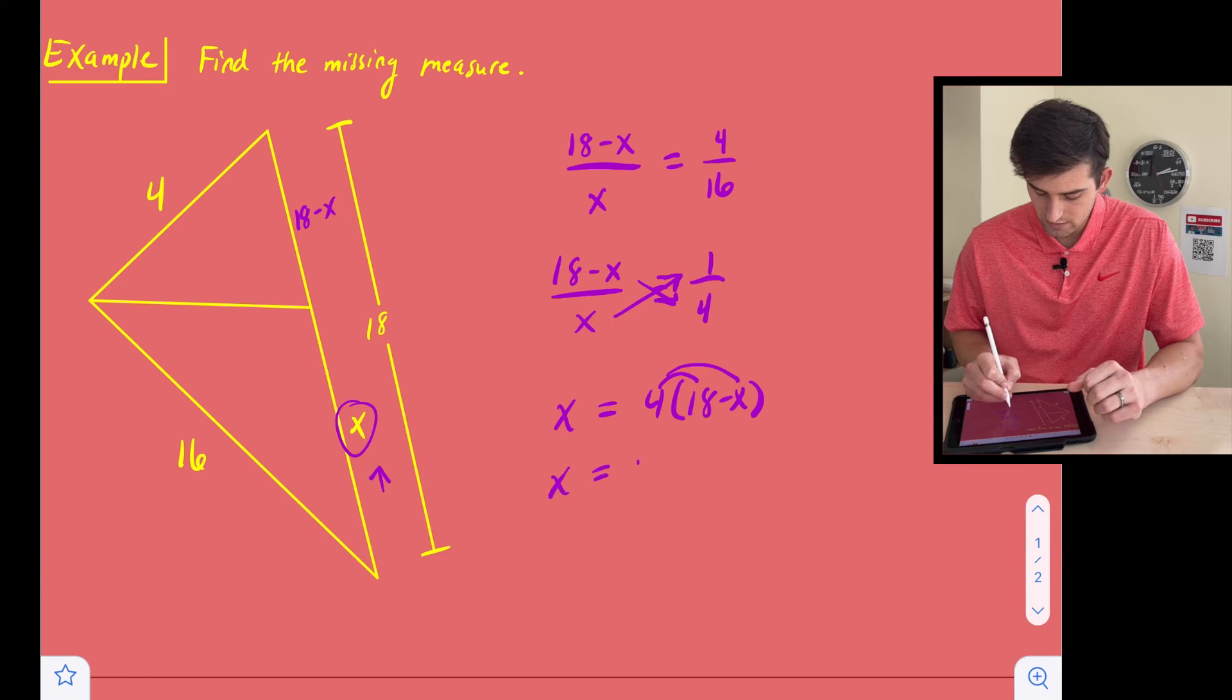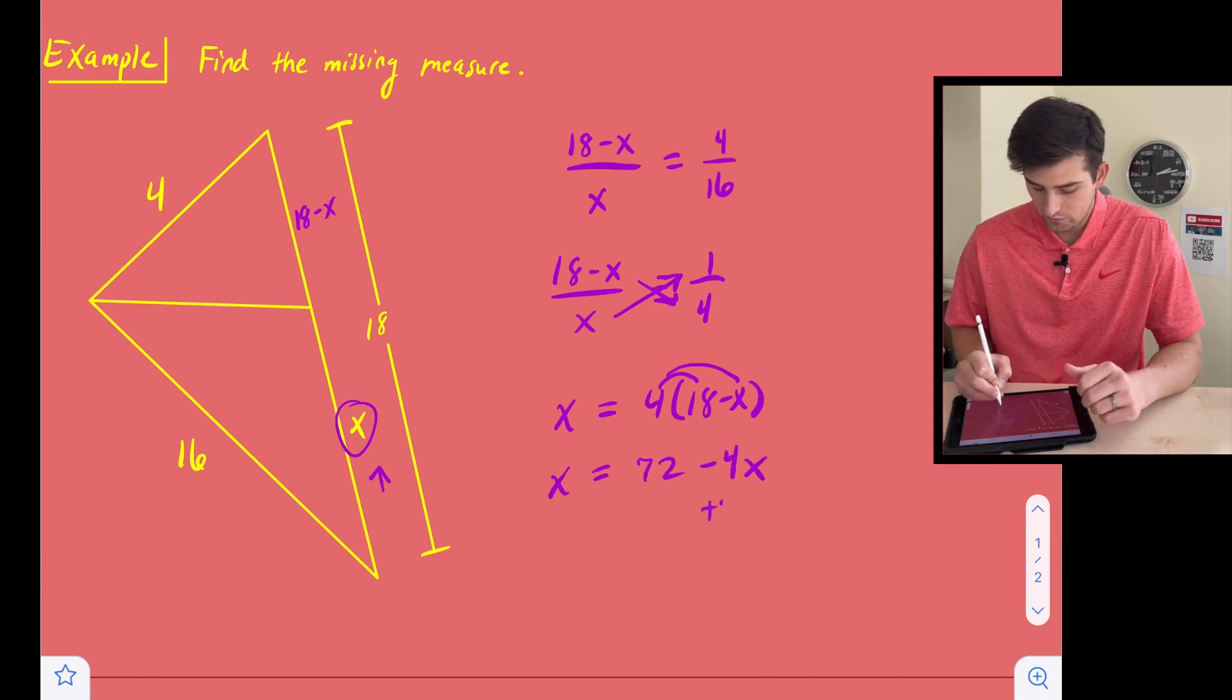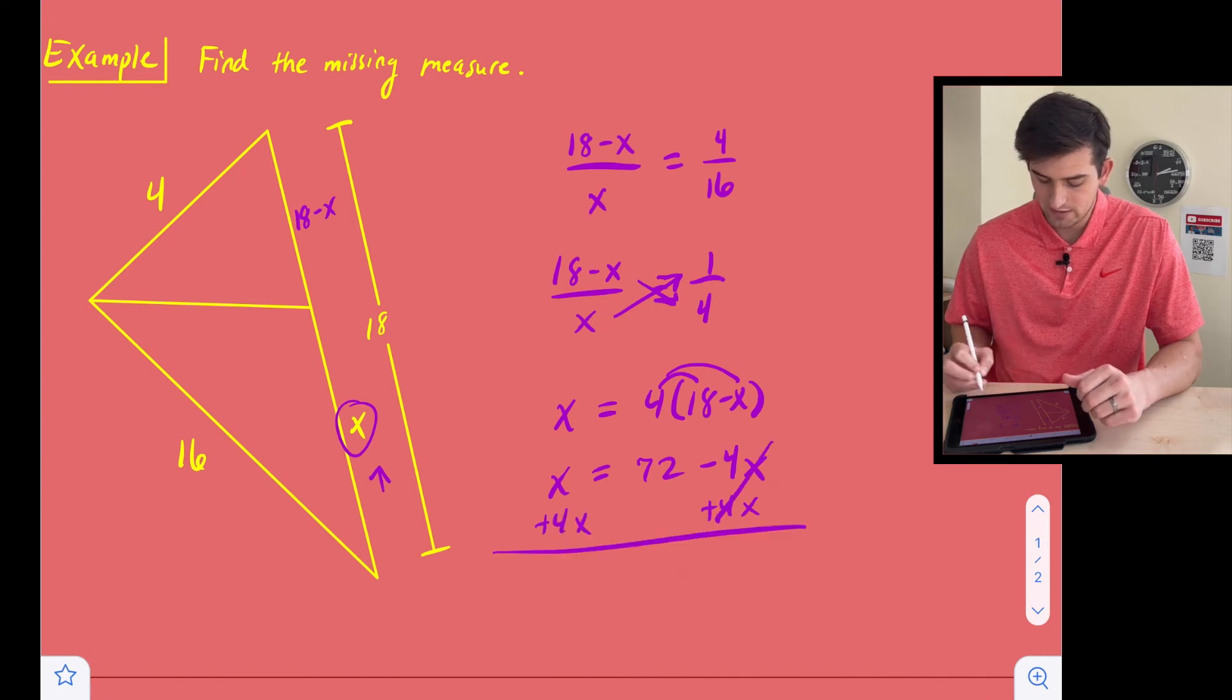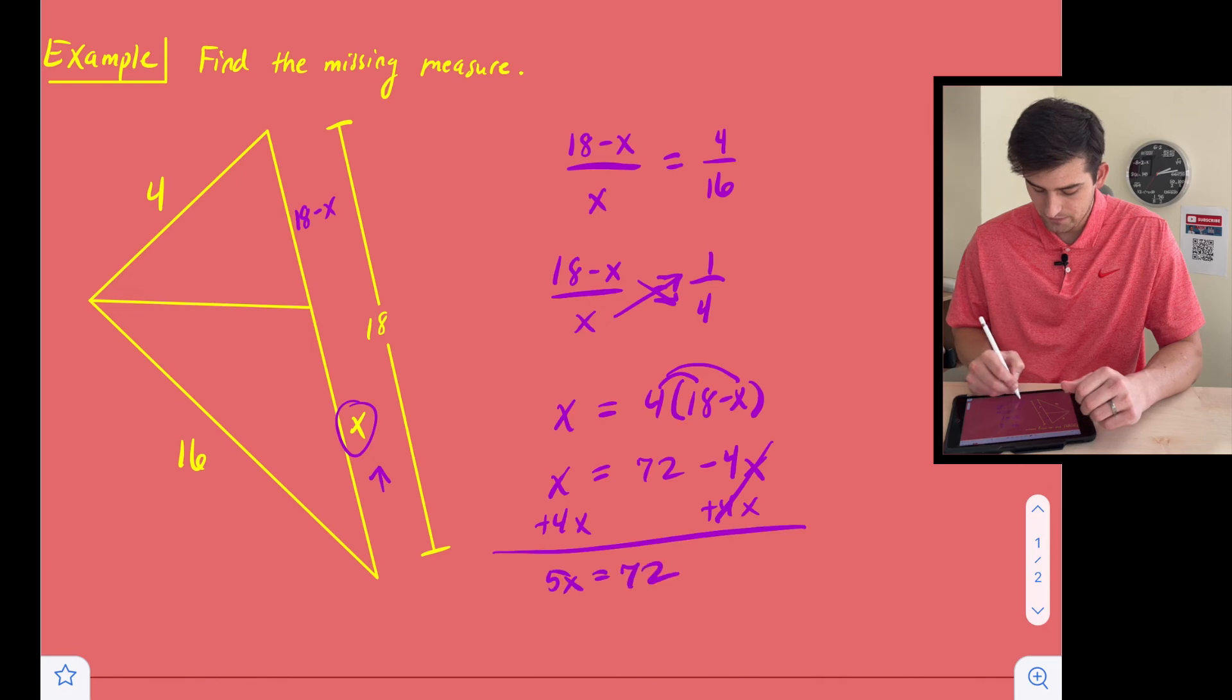So we get X equals 72 minus 4X. And now we can add 4X to both sides. So that cancels out the negative 4X on the right. And we get 5X equals 72. And now we can divide both sides by five to find our missing measure.